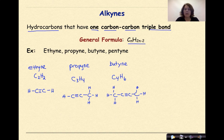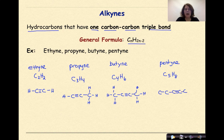Let's do one more: pentyne. 'Pent' means five, so C5H8 — 2×5-2=8. Put down five carbons, place a triple bond between two of them, fill the rest with single bonds, then add enough bonds around each carbon to make sure it has four bonds, and add your hydrogens. In this case we should be using eight hydrogens — and we did. This is an example of how you would write alkynes.